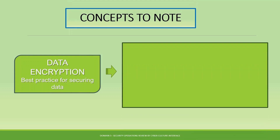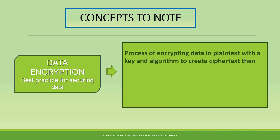Another concept you need to take note of is data encryption. Data encryption is a best practice — when you are sending data or traffic out of your system, it is always good to encrypt it so that data in transit cannot be understood if intercepted. Even if it is intercepted, the data is encrypted and therefore not readable, making it useless to whoever intercepted it.